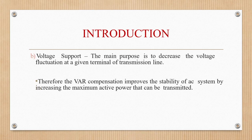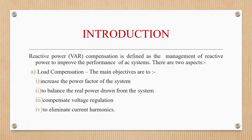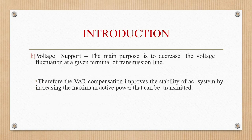For voltage support, the main purpose is to decrease the voltage fluctuation at a given terminal of the transmission line. Therefore, VAR compensation improves the stability of the AC system by increasing the maximum active power that can be transmitted. By improving power factor, balancing power drawn, compensating voltage regulation, removing harmonics, and decreasing voltage fluctuations, the stability of the system will be increased and maximum active power can be transmitted.